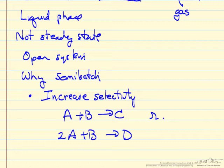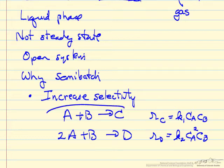The rate that we form the product C is proportional to a rate constant, and the concentration of A and B to the first power. The rate that we form the product D is another rate constant, and let's say it's second order in A and first order in B. If this is our desired product, desired reaction,